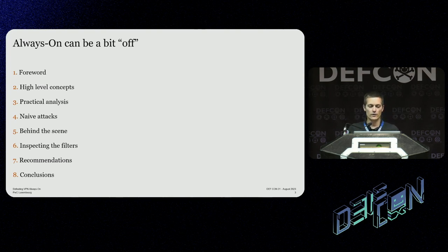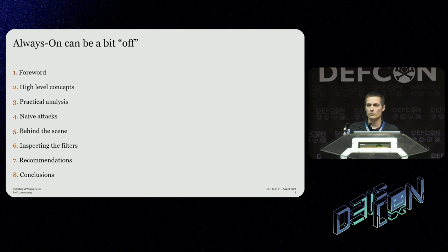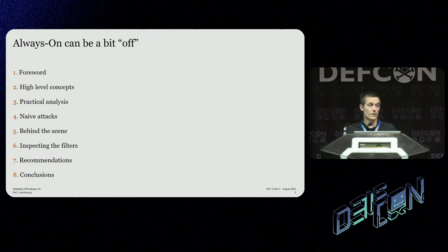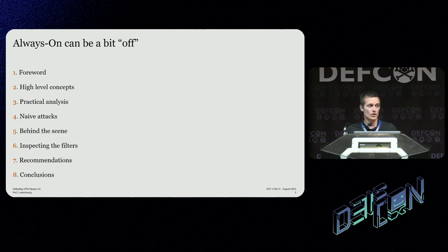So I decided to dig further and try to better understand how it works when it doesn't really work. We will start with the high-level concepts and components of Always On, then the practical analysis of what it is made of. We will identify some naive attacks, inspect some filters, find new attacks to break free from Always On, and finish with recommendations.